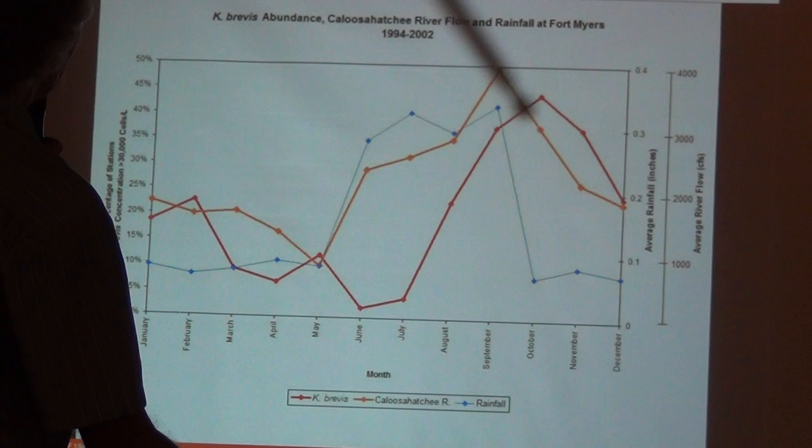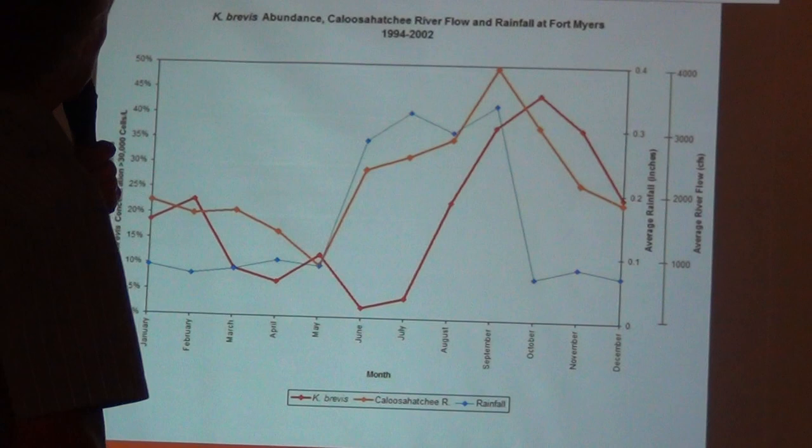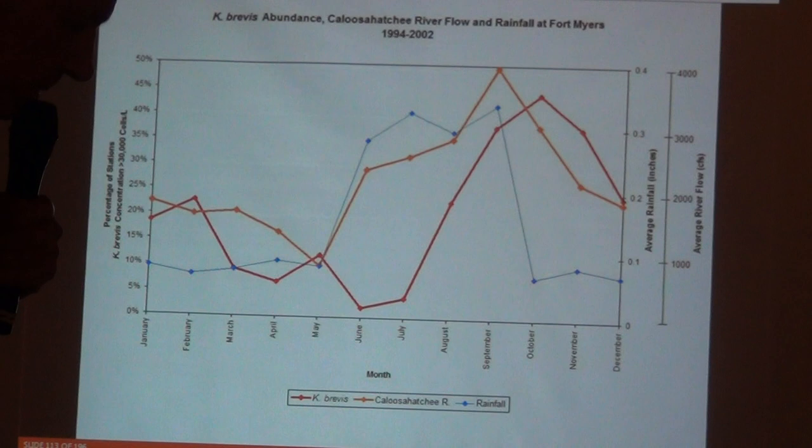Orange is flow down the Caloosahatchee River, and red is the size of the algal bloom — the red tide. There's a lag because it's a slow-growing algae, but you can see that correlation. It's a little bit misleading because there are other things going on; it doesn't happen like that every year.